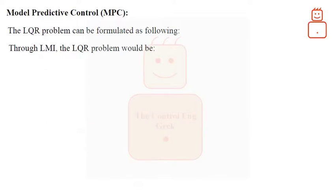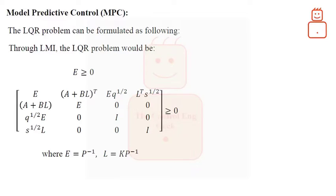Through LMI technique, the LQR problem would be as shown. We have two LMIs that have to be satisfied at the same time. We have changed two variables as shown below in order to derive the two LMI relations.